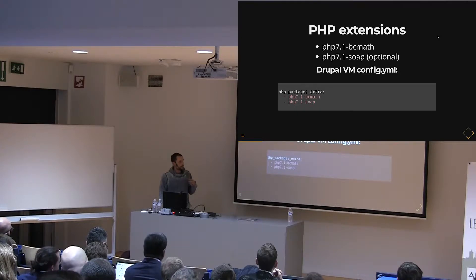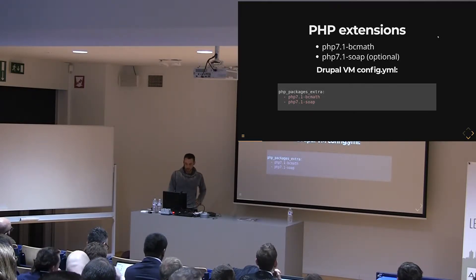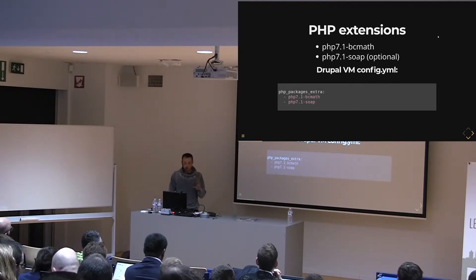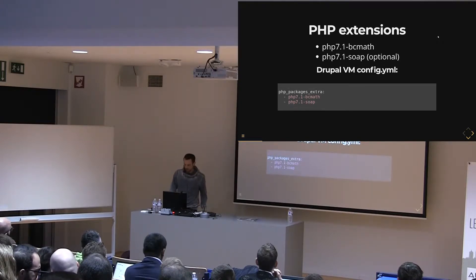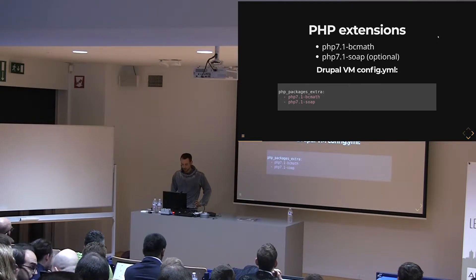In my local development I'm using PHP 7.1, but if you're using another version you have to switch that out. For those who use Drupal VM, you have to add the following lines to your config.yml file to install those packages. Soap is optional — it's only required when you want to make an integration with an external payment provider which only has a SOAP API, for example Dockdata. Then you also need to install the SOAP PHP extension.